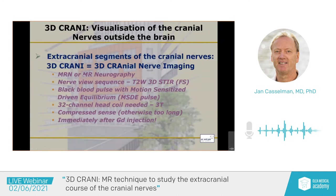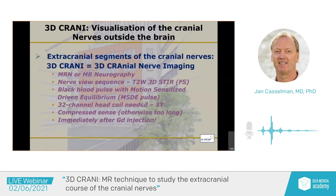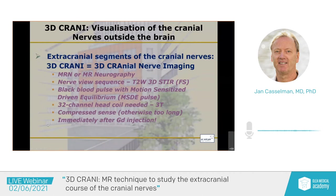We will still use MR neurography — the T2-weighted 3D inversion recovery sequence with fat sat. But you need more. We add a black blood pulse with motion-sensitized driven equilibrium. On top of that, we will need a better coil: a 32-channel head coil, with the patient placed as high as possible. We do that on 3 Tesla because of the higher signal-to-noise ratio. To achieve that high resolution without excessive scan time, you need compressed sense to get the time down. And of course, gadolinium is used to get rid of the high signals of the vessels around the nerves.